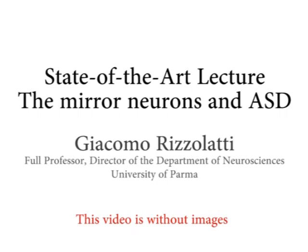Where we discovered mirror neurons — we started from area F5, which is a premotor cortex in the monkey. At the beginning, we were not interested at all in mirror neurons; we were interested to describe the properties of this area. We found that some of those neurons were motor neurons, no surprise. But then there were two categories of visual neurons: we call them canonical neurons, and the other, mirror neurons. From classical neurology, we know the left hand is controlled by the right hemisphere, so one would expect a similar correlation at the neural level.